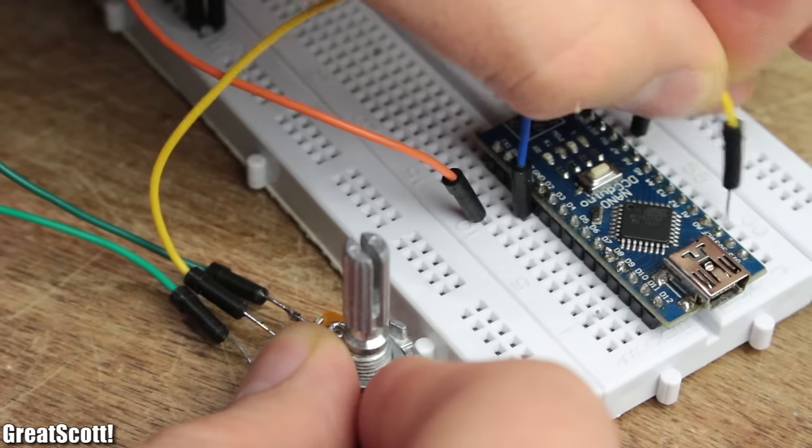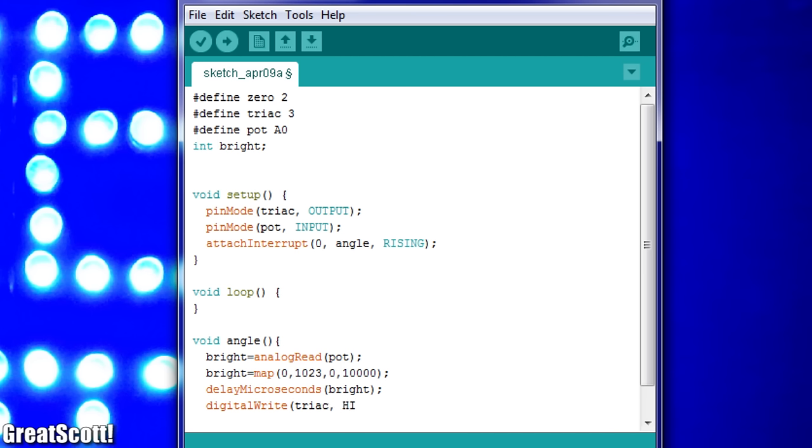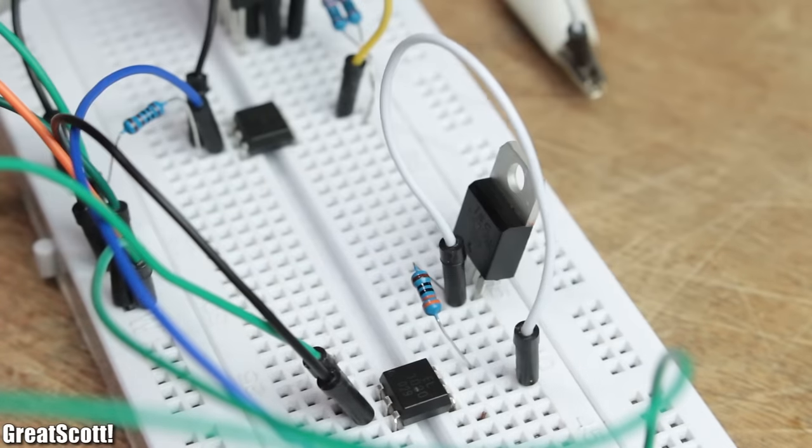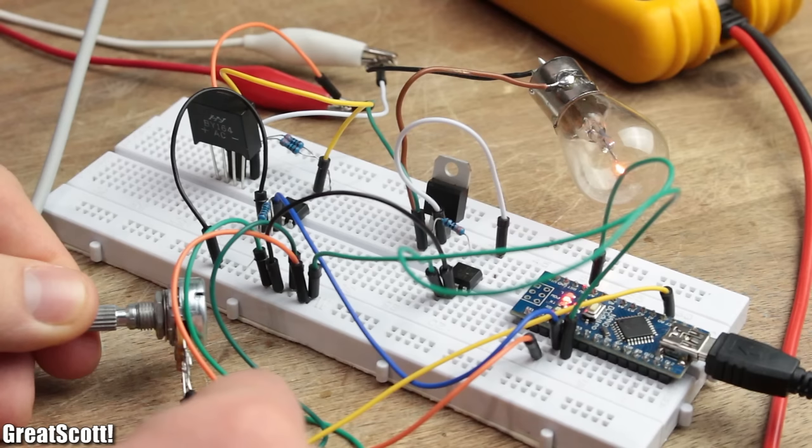This zero point indicator then connects to pin 2 of the Arduino Nano which I used as an external interrupt in order to create a delay between 0 and 10 milliseconds according to the position of a potentiometer on pin A0. After this delay the pin 3 gets pulled high which connects to another optocoupler which then finally activates a triac and thus our lightbulb gets its energy.